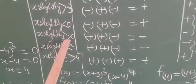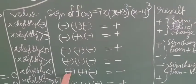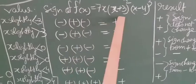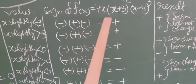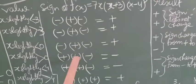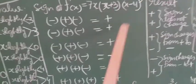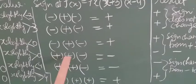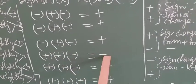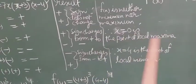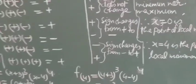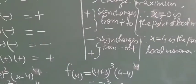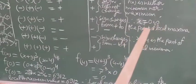Now putting x slightly more than 0, say 0.1, in f'(x): in 7x it is positive, in (x+3)² it is also positive, and in (x−4)³ it is negative. So plus × plus × minus = negative. The sign changes from positive to negative, so x = 0 is the point of local maxima.